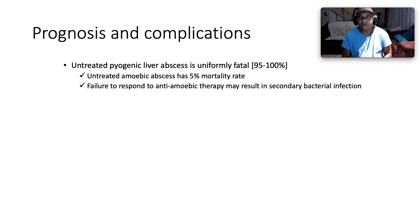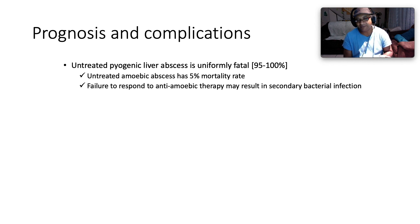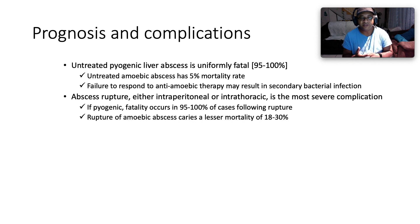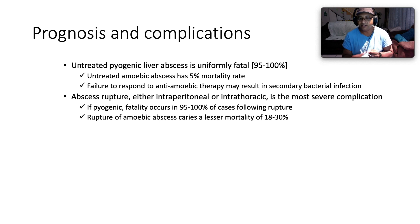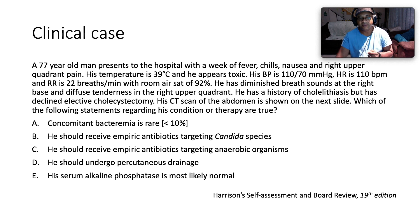Untreated pyogenic liver abscess is uniformly fatal in 95–100% of cases. Untreated amoebic abscess has a 5% mortality rate. Failure to respond to anti-amoebic therapy may result in secondary bacterial infection. Abscess rupture — either intraperitoneally or intrathoracically — is the most dreaded complication. For pyogenic abscess, fatality following rupture occurs in 95–100% of cases. Rupture of an amoebic abscess carries a lesser but still significant mortality of 18–30%.